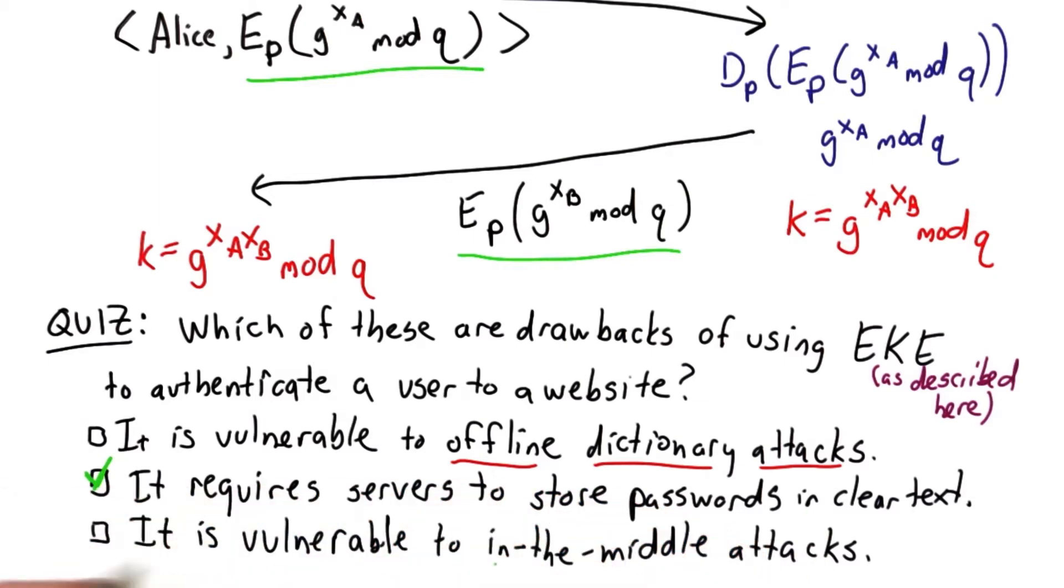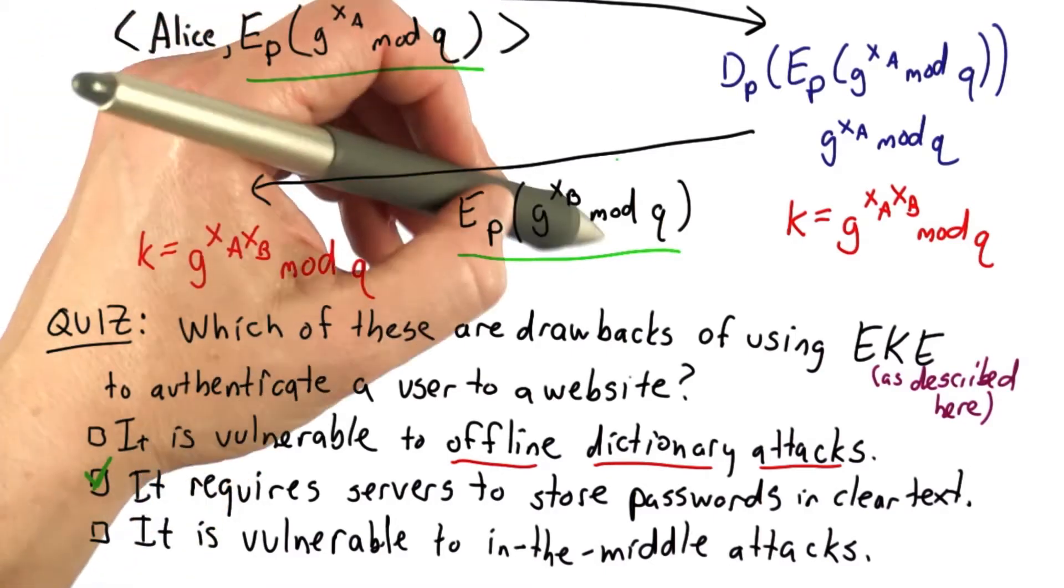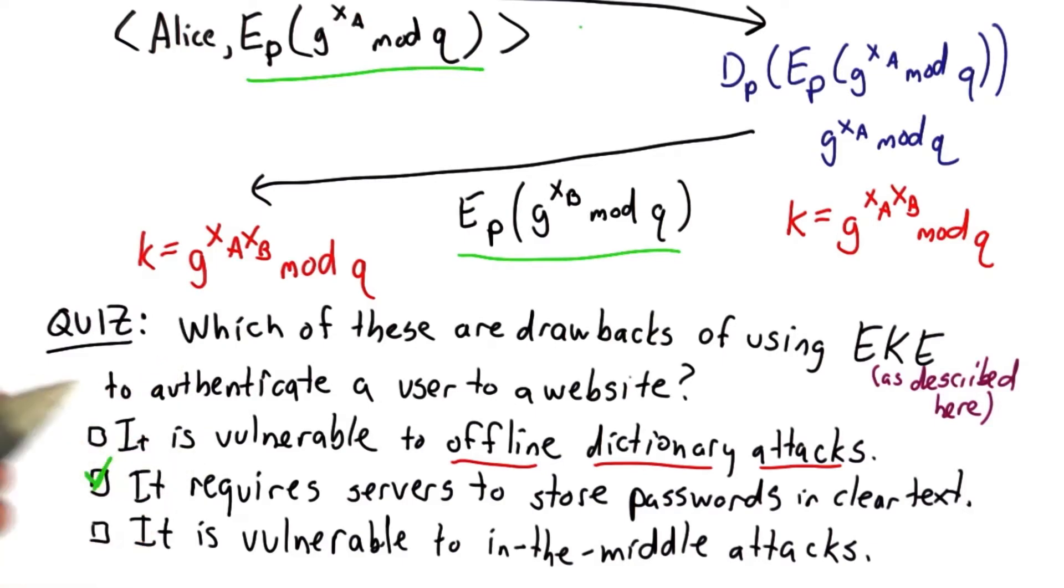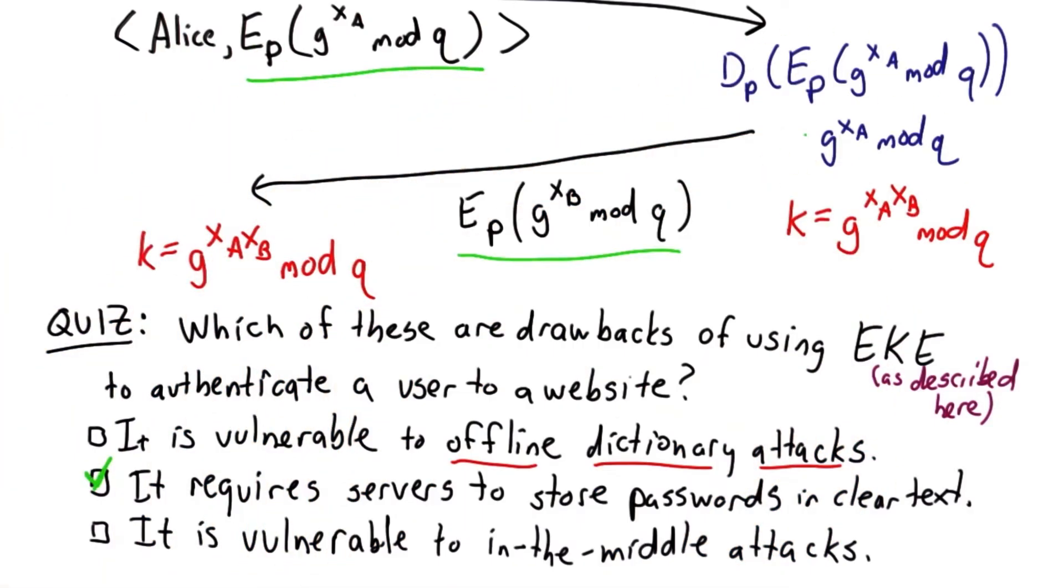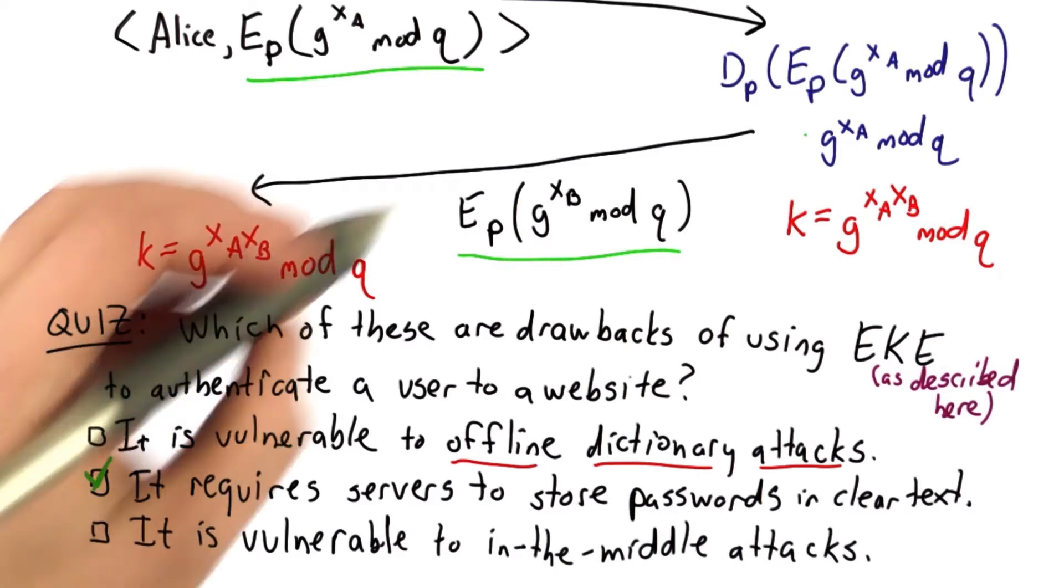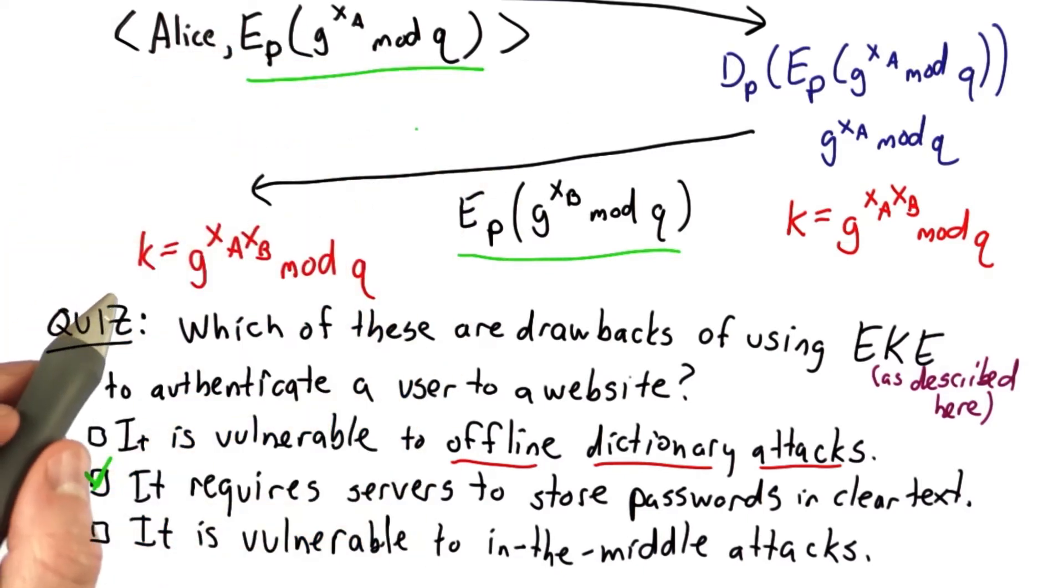So that's a good property. It also satisfies this other property that it is actually not vulnerable to the meet-in-the-middle attack that Diffie-Hellman was vulnerable to. Because in this case, if the attacker tries to relay something without knowing the password, that will lead to some other key being computed not known to the attacker, and the attacker won't be able to set up the middle attack.